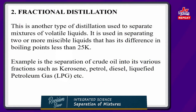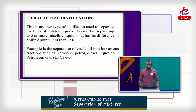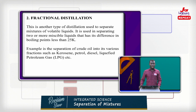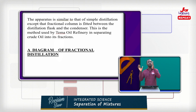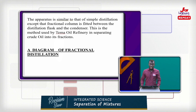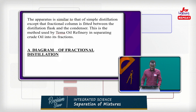We have another type of distillation called fractional distillation. This is used to separate mixtures of volatile liquids — specifically two or more miscible liquids with a difference in boiling point of less than 25 Kelvin. An example is the separation of crude oil into various fractions such as kerosene, petrol, diesel, and LPG gas. The apparatus is similar to simple distillation except that a fractionating column is fitted between the distillation flask and the condenser. This is the method used by oil refineries in separating crude oil into fractions.